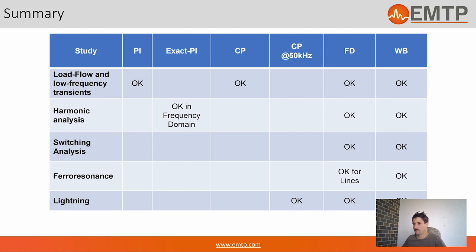The wideband model is the latest addition to EMTP and the most accurate model — it's the one we recommend to use. The main mathematical difference from the FD model is that both use a transformation matrix to go from the ABC domain to a special eigenvalue modal domain. For the wideband model, this transformation matrix is also frequency dependent, whereas for the FD model only the eigenvalues are frequency dependent. This model is also a must-use for underground cables.